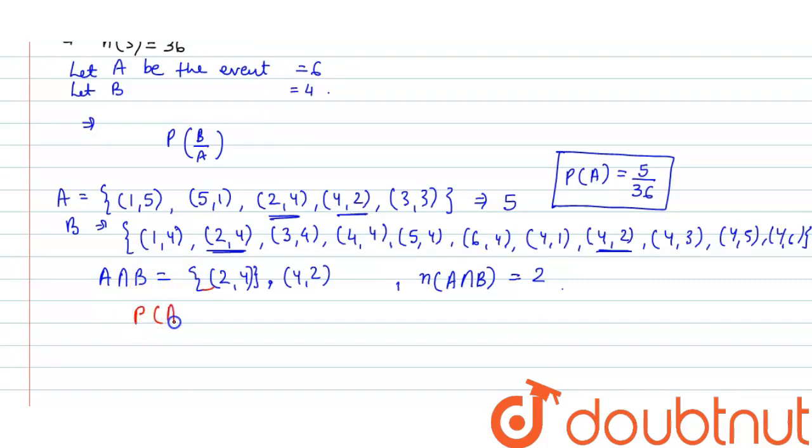So probability of A intersection B is 2 upon 36. Now, we have to find P of B over A, is according to formula, A intersection B upon probability of A. This is 2 upon 36 upon 5 upon 36. 36, 36 will be cancelled out and 2 upon 5. So we can say the required solution is 2 upon 5.